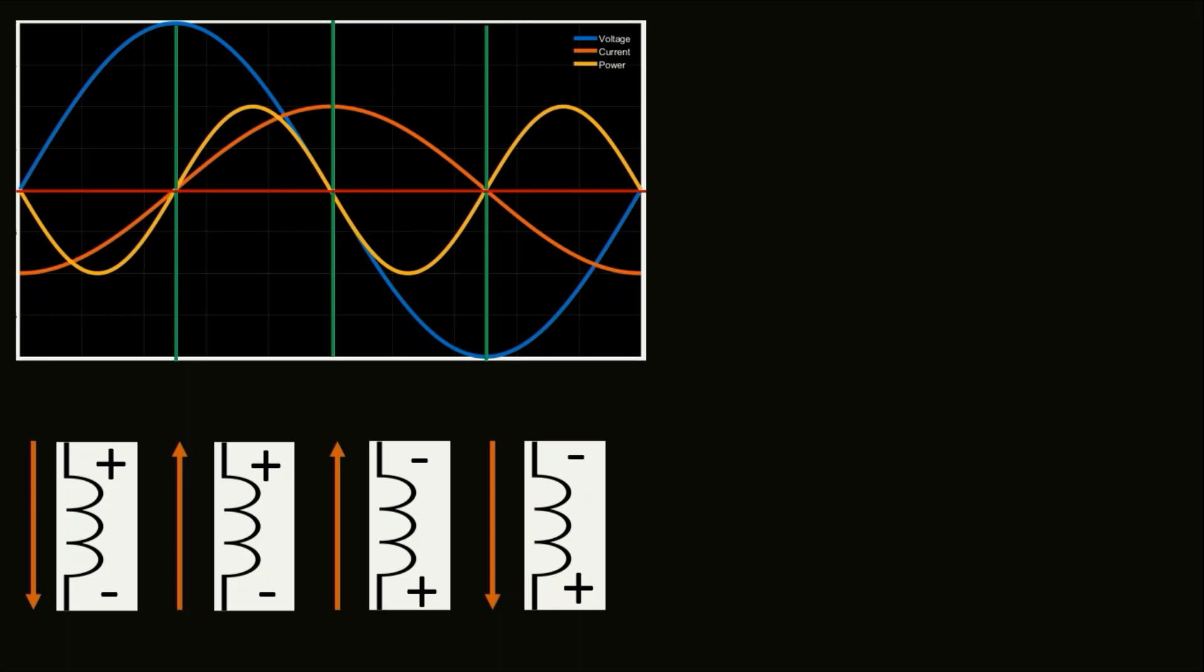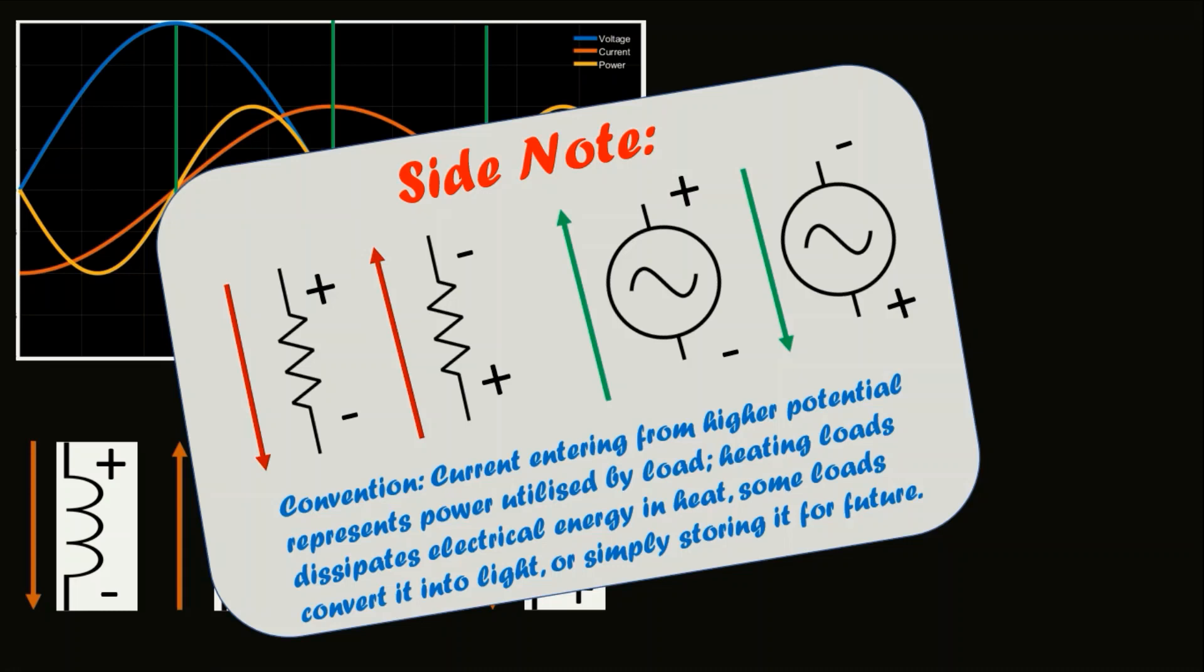What useful information can we extract by observing this property of an inductor? To understand that, let us look at the behavior of resistance. As you can see here that the current in resistance will always enter from the higher potential side, the positive voltage side. And if you observe the source, then we can see that the current leaves from the higher potential side or the positive terminal side.